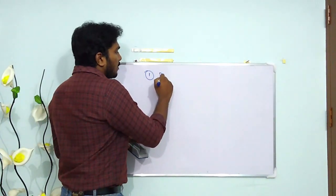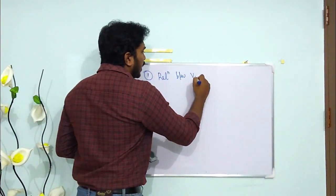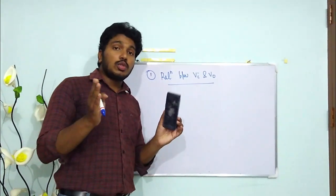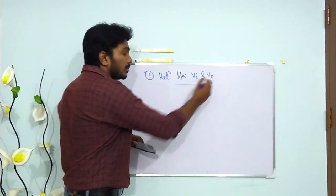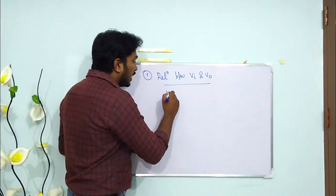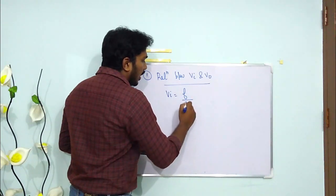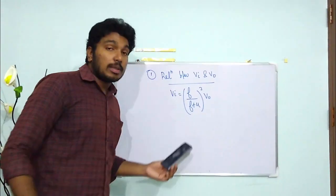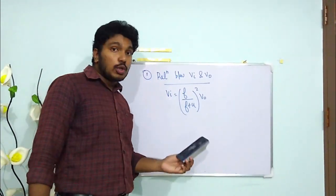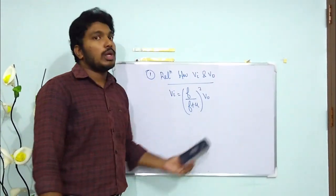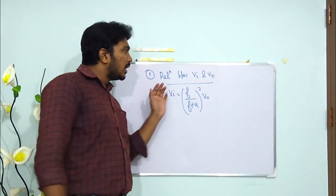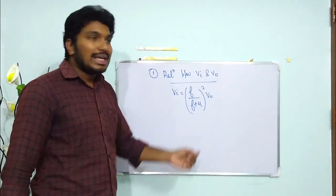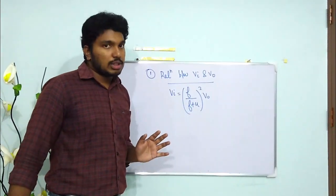The first condition we examine is the relation between the speed of the image and the speed of the object. If an object is moving toward a lens with speed V_U, then the image moves with speed equal to [F/(F + U)]² × V_U.